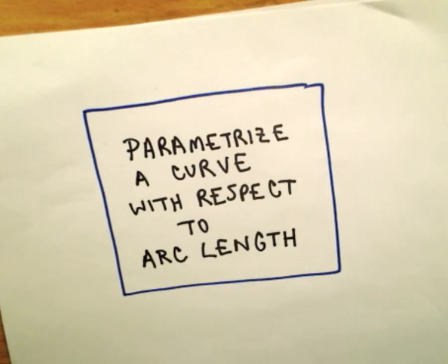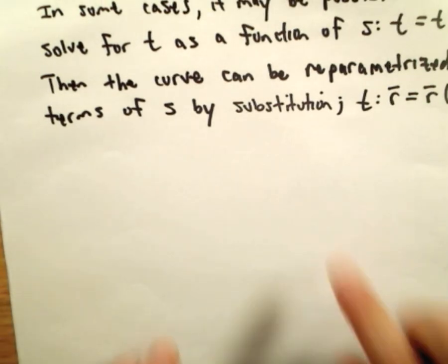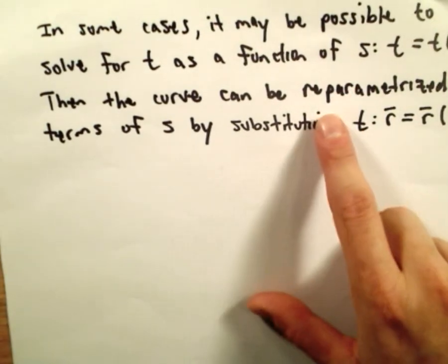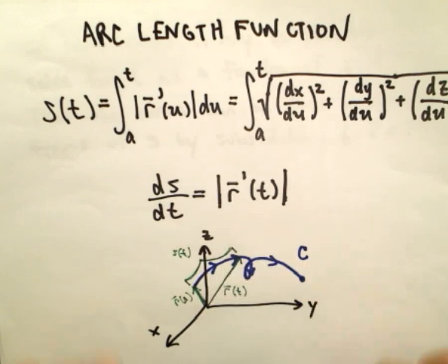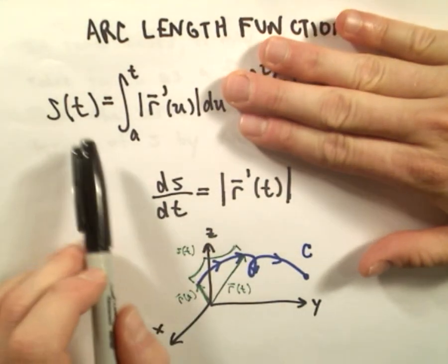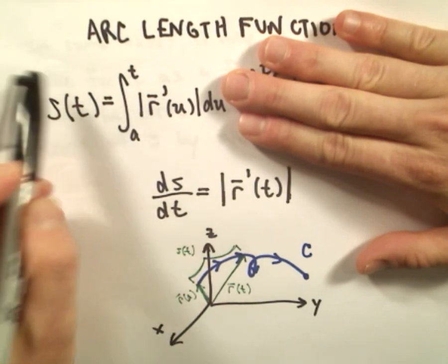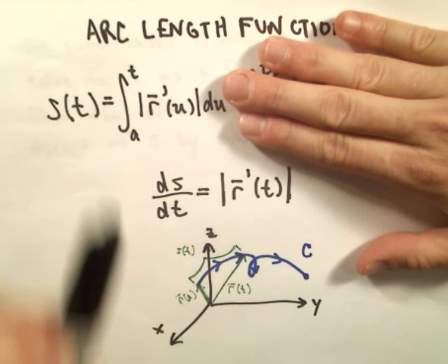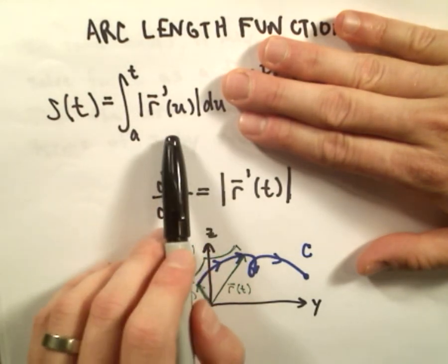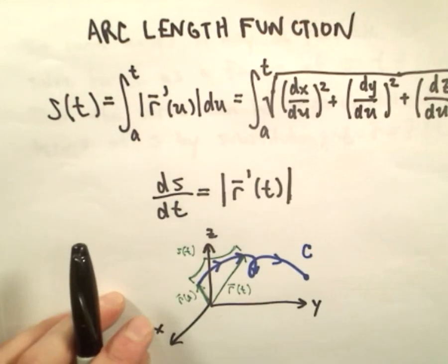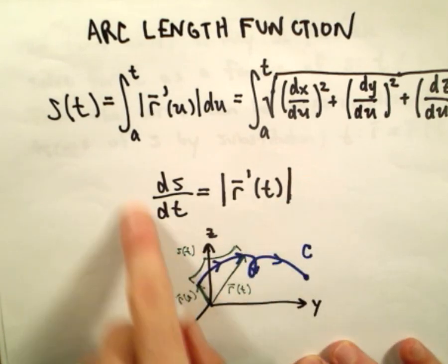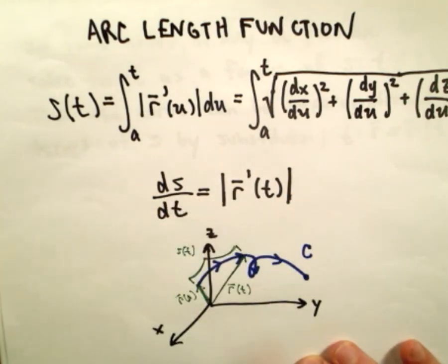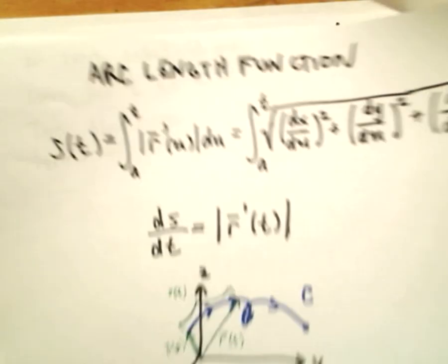In some cases it may be possible to solve for t as a function of s, and then we can do a reparametrization by substitution. By the Fundamental Theorem of Calculus, if you take the derivative of both sides, ds/dt equals the magnitude of r'(t) — you just plug in the upper limit of integration since it's a variable.